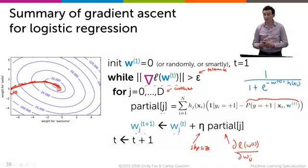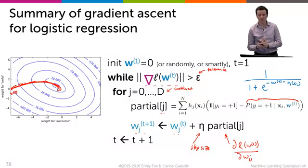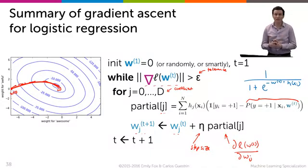So I just compute that prediction, whatever my model thinks, I subtract the indicator, this is a positive example, multiply by the feature value, and there you go.